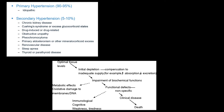Between optimal tissue levels and clinical disease are several steps: initial depletion — which may not be detected since primary care doesn't routinely check micronutrients — then biochemical impairment where hypertension starts along with oxidative damage and free radicals. Antioxidants and phytonutrients are important at this level to prevent progression to functional defects, where patients feel tired and weak but labs appear normal to their allopathic provider.